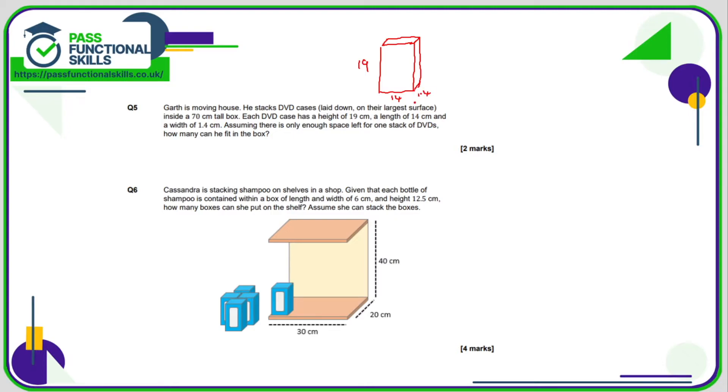So this is 1.4. So we're in a box, we're going to put them in a box which is 70 centimeters tall, and they're going to be laid down on their largest face. So this is the largest face, so therefore they're going to be stacked on top of each other. So the dimension that is important is the 1.4. So how many 1.4s go into 70? So 70 divided by 1.4, you can use a calculator for this question. And 70 divided by 1.4 is 50, so he can fit 50 of these in the box.